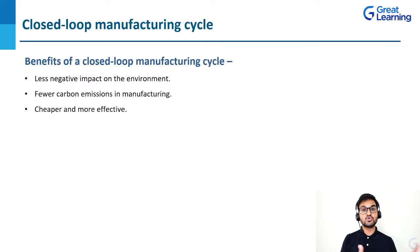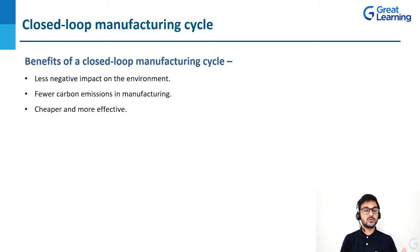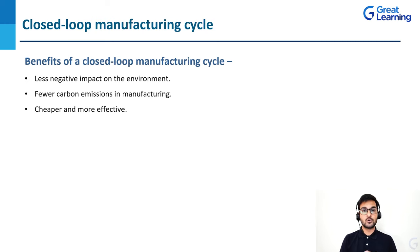There are many benefits of having a closed-loop manufacturing cycle. Number one is less negative impact on the environment, because overall fewer carbon emissions occur in the manufacturing process. And then it is cheaper and more effective — this process is cheaper because whatever output we get from the decline phase is used as input for the introduction phase, saving a lot of time, energy, and money. There are many companies actually going for closed-loop manufacturing cycles these days.